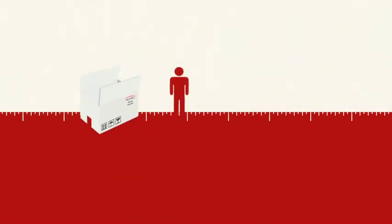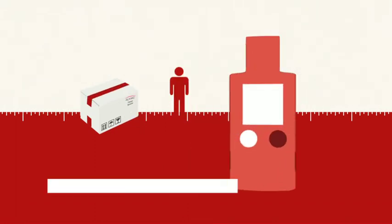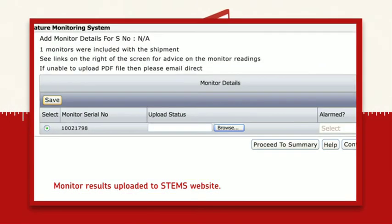Upon receipt of the shipment, the consignee retrieves the monitor, which confirms that the shipment has travelled in good condition. The results are then uploaded directly to the STEMS online software system.